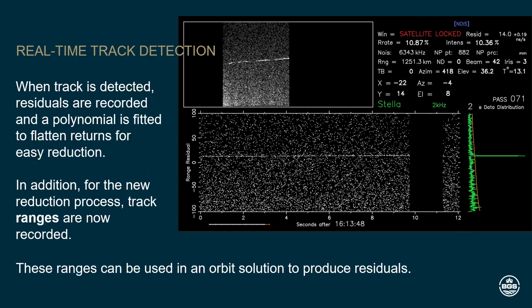When track is detected, residuals are recorded and a polynomial is fitted to flatten the returns for easy reduction. In addition, in this new reduction process, track ranges are recorded so these ranges can be used in an orbit solution to produce residuals — so not using a polynomial fit.